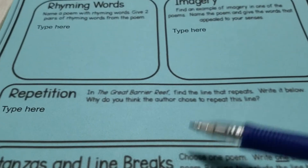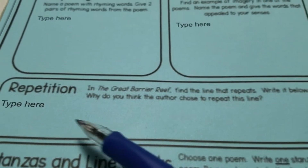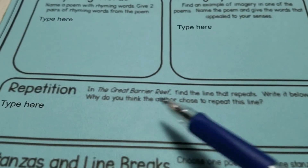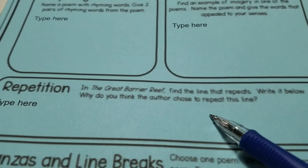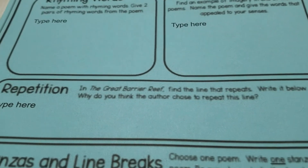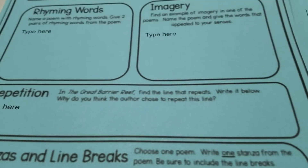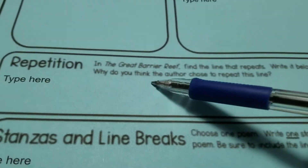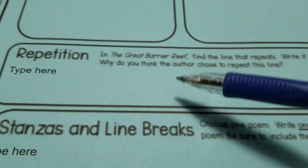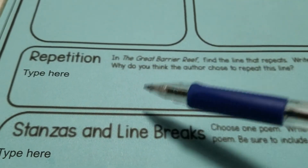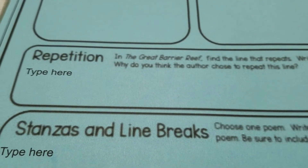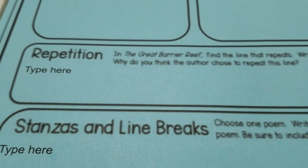In this one you are going to have to write a sentence: 'I think the author chose to repeat this line because...' and then tell me why you think he repeated the line. You also have to write the line — pick out the line that he repeated and then just give me that one sentence.